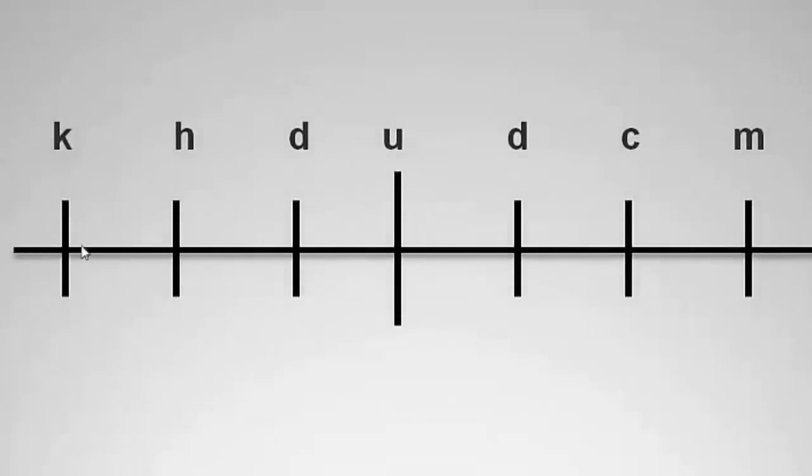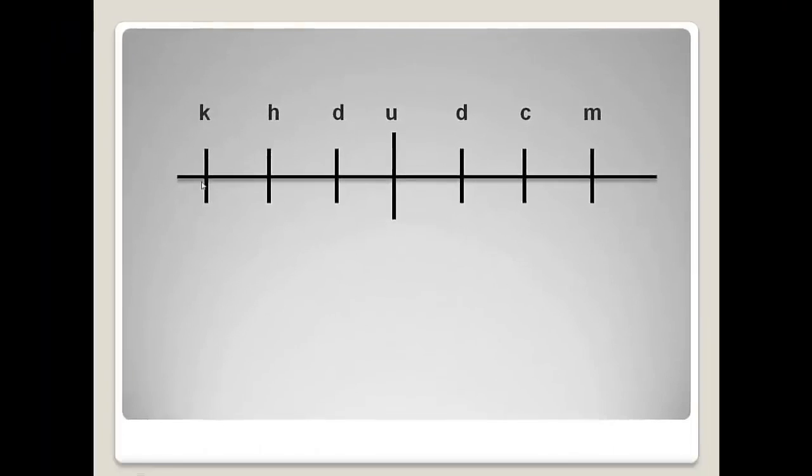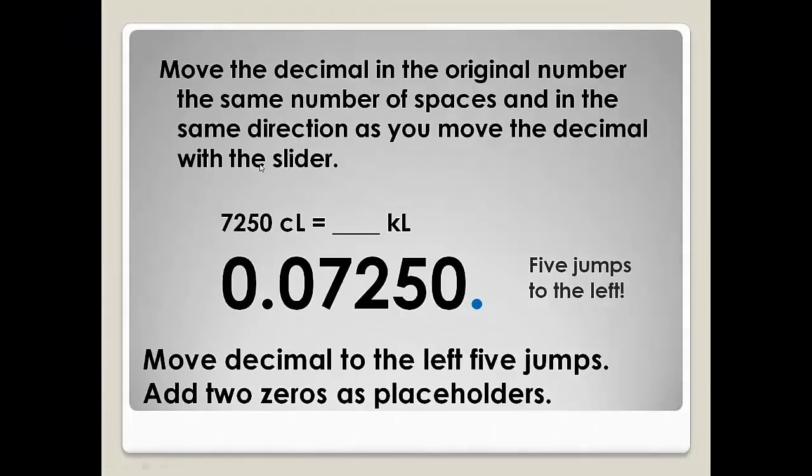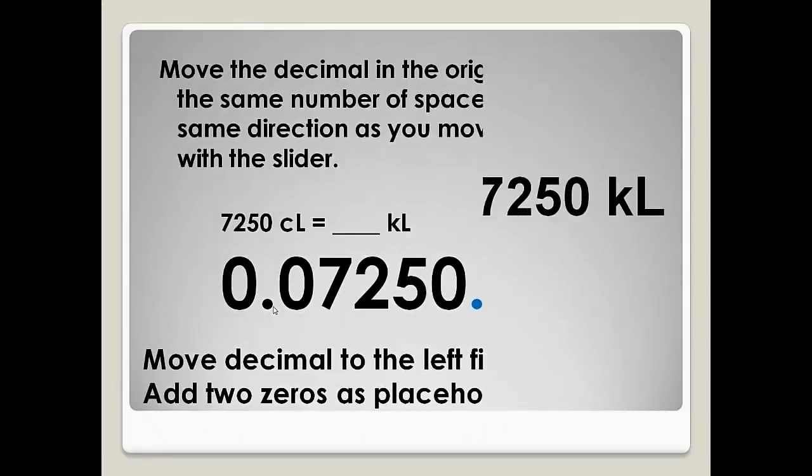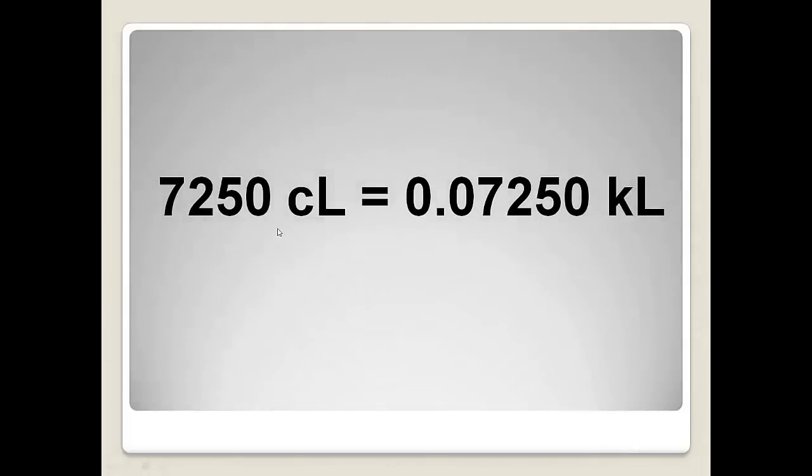I'm sure you did great using your metric converter. So we're going from centi to kilo. Centi is right here, kilo is right here. Let's count: 1, 2, 3, 4, 5 jumps to the left. We're going to move our decimal in the original number the same number of spaces and the same direction that we moved the slider. So let's give it a try: 1, 2, 3, 4, 5 jumps to the left. We added these two zeros here as placeholders. We don't really need this first one, but sometimes it makes it a little bit easier to read. So 7,250 centiliters is 0.07250 kiloliters.